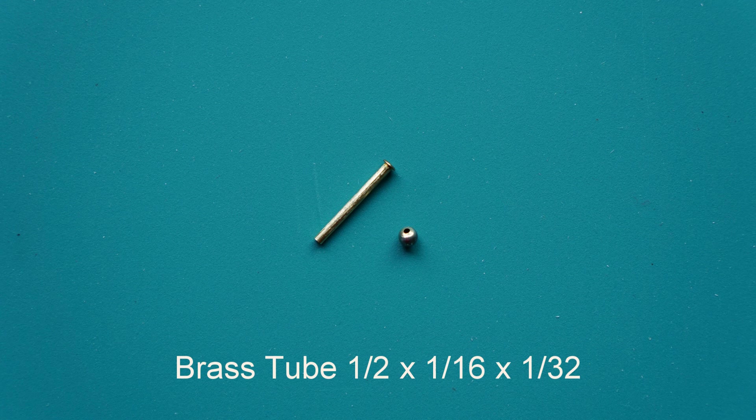If you can't find a small bead like this, just use a short section of the brass tube. Make sure the ends are smooth and even.